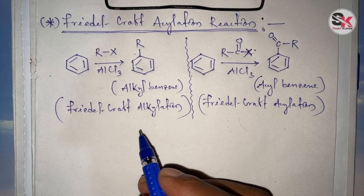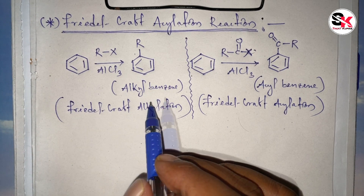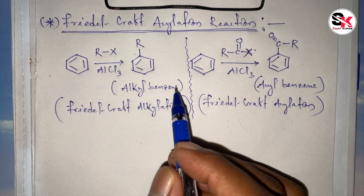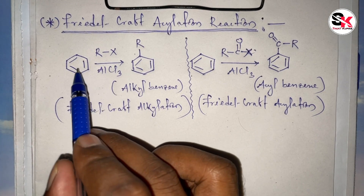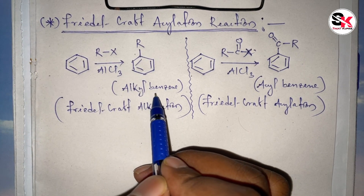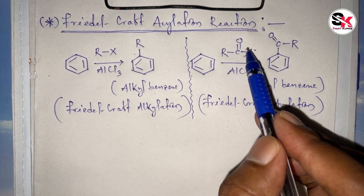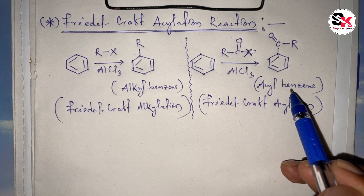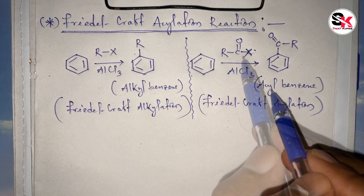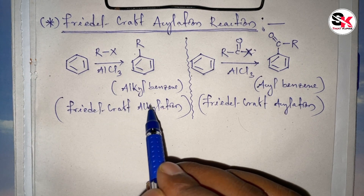Hello everyone, welcome back to my channel. In this video we will discuss Friedel-Craft acylation reaction. This reaction is similar to Friedel-Craft alkylation reaction. In Friedel-Craft alkylation reaction, benzene reacts with alkyl halide in presence of anhydrous AlCl3 to form alkyl benzene, while in Friedel-Craft acylation reaction, instead of alkyl halide, benzene reacts with acyl halide to form acyl benzene.